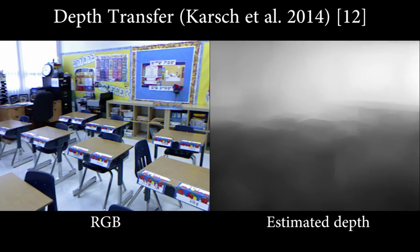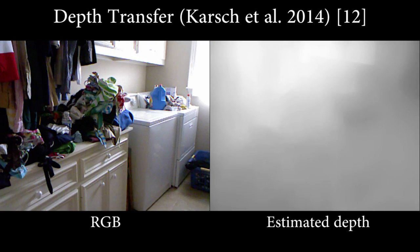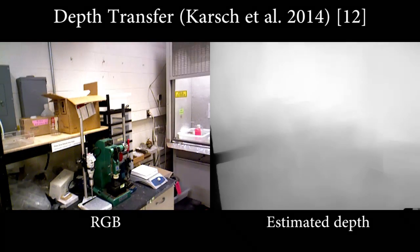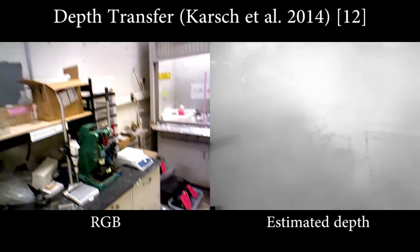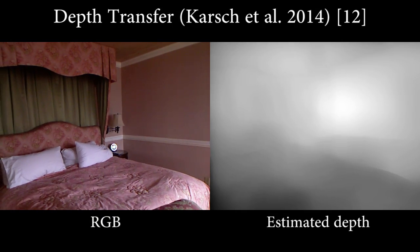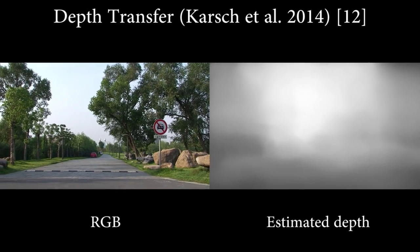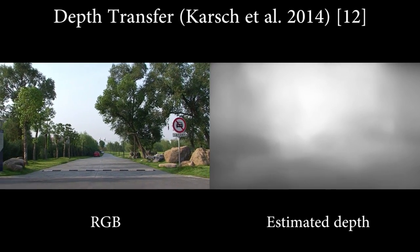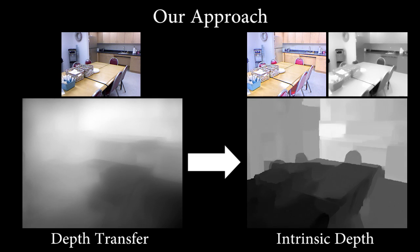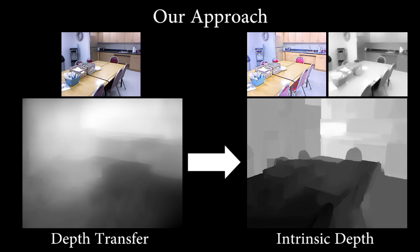We build upon a recent example-based depth estimation method called depth transfer. This method matches RGB patches to a database of images with known depth maps, then estimates scene depth by combining the example depth patches while enforcing spatial and temporal coherence. Raw pixel values, however, are not directly related to physical scene structure. Here we show that working with albedo and shading instead of RGB values, we significantly improve depth estimation.